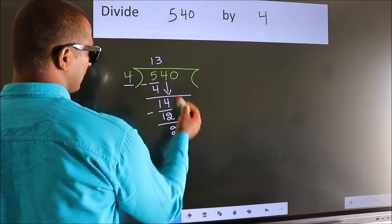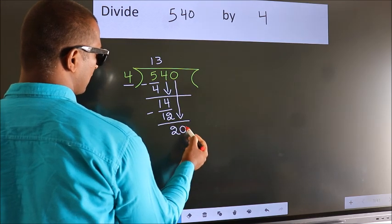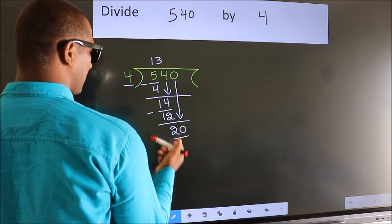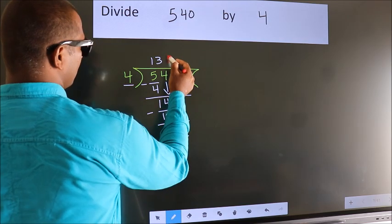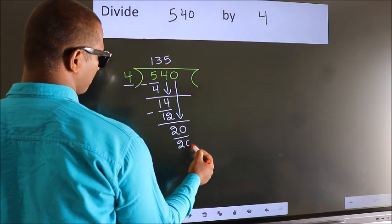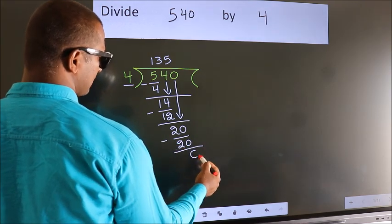After this, bring down the beside number. So, 0 down. So, 20. When do we get 20 in the 4 table? 4 fives, 20. Now we subtract. We get 0.